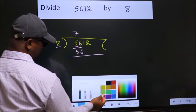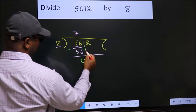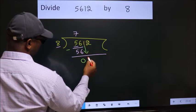Now we should subtract. We get 0. After this, bring down the beside number. So 1 down.